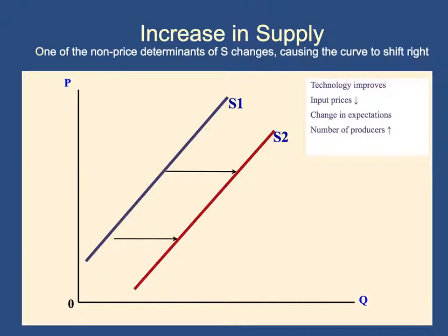These same factors can also shift the supply curve right. If technology improves, you can produce more output at a lower cost, so you're willing to supply more output at every price level, shifting the supply curve to the right. If input prices decrease — say the price of wood drops and it's very cheap to buy — you're going to be willing to provide more tables at every single price level, shifting the supply curve right. If you think that in the future people are going to be buying less of your product, right now you want to supply more at every price level, shifting the supply curve right. And if the number of producers increases, more people will be willing to supply more output at every price level, so the supply curve shifts right.